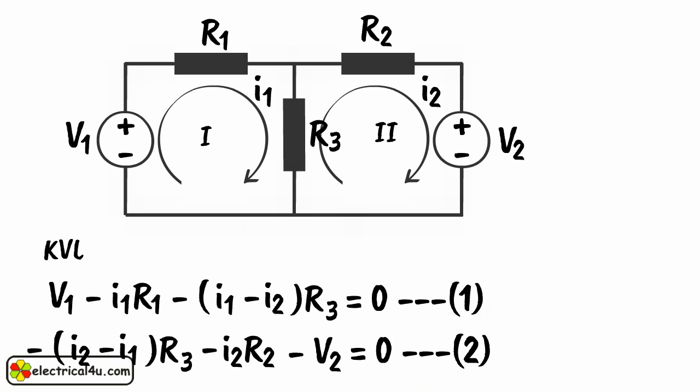If V1, V2, R1, R2, and R3 are known, then I1 and I2 can be found out easily from these equations.